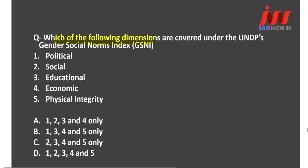Which of the following dimensions are covered under UNDP's Gender Social Norms Index, GSNI? The options are: Political, Social, Educational, Economic, and Physical Integrity.